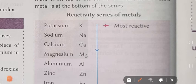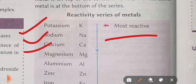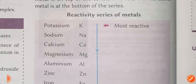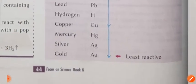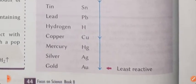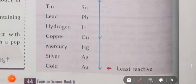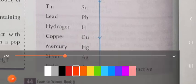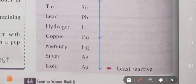As you can see in your book, this is the reactivity series. The most reactive elements and metals are present at the top of the series, which are potassium, sodium and calcium. The least reactive is present at the last, which is gold. Gold is the least reactive metal. Underline this point.